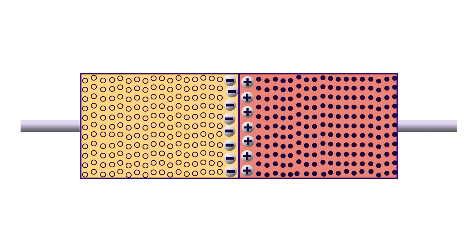After the depletion region achieves a moderate width, it starts repelling the electrons from diffusing into the P side. Therefore, diffusion stops completely. At this point, the junction is said to have attained equilibrium.